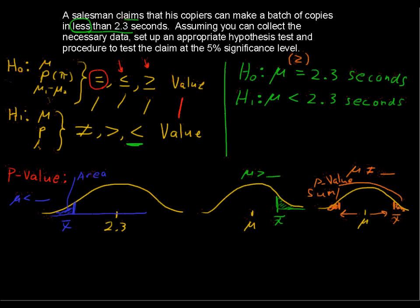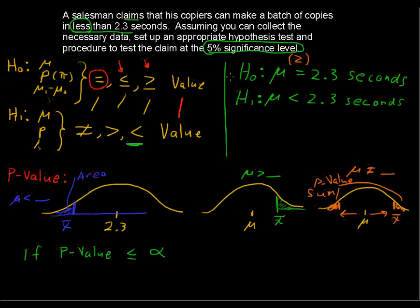Once you find the p-value, here's what you do. If the p-value is less than or equal to your significance level alpha — let's define that. The significance level is like asking: what chance are you okay with of making a mistake? A 5% significance level means you're willing to take a 5% chance of making an error. So alpha = 0.05. If you don't see a significance level specified, just assume alpha = 0.05.